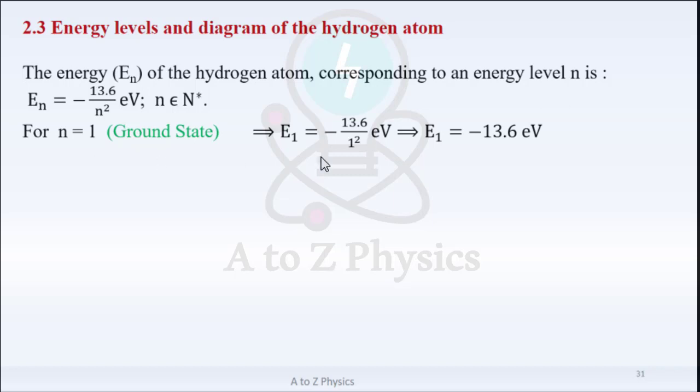For N = 1: E1 = −13.6/1² = −13.6 eV, which corresponds to the ground state.